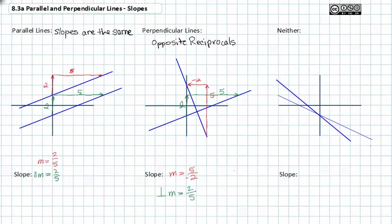Let's look at the different slopes and see how they compare. The first one has a rise of two and a run of four in the negative direction, so the first slope is two over negative four, which reduces to negative one-half. If we compare that to the second line, we've got a rise of two and a run of negative two, so that slope is two over negative two, or negative one. These are not the same slope, so they can't be parallel, and they are not the negative reciprocals of each other, so they're not perpendicular.